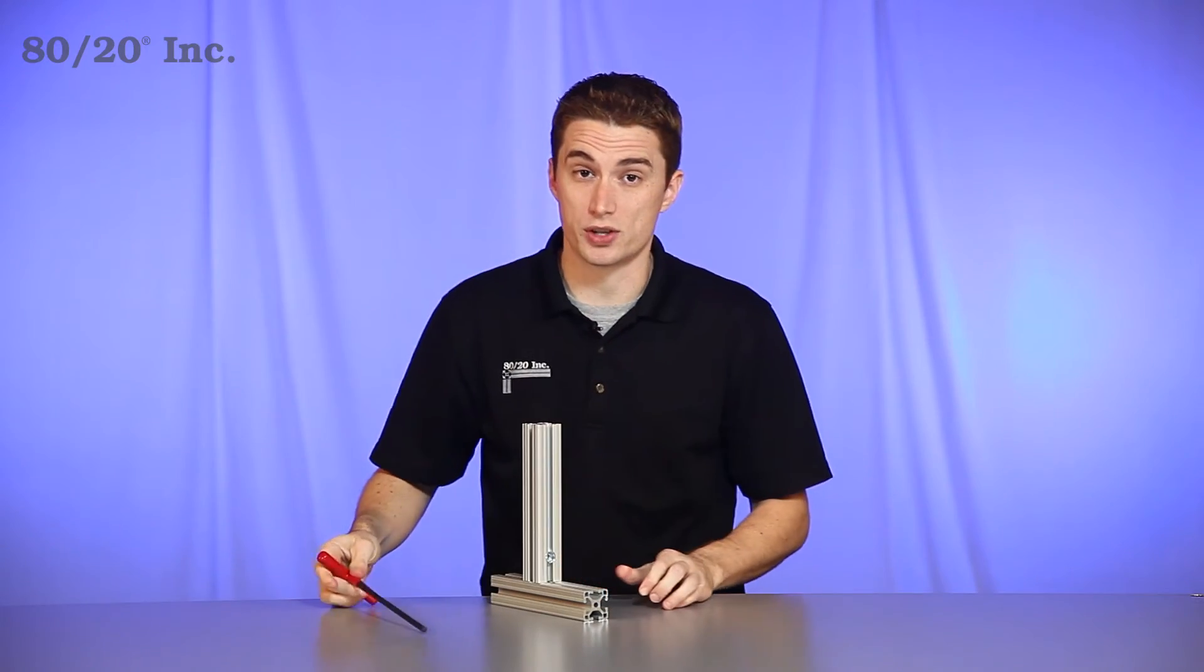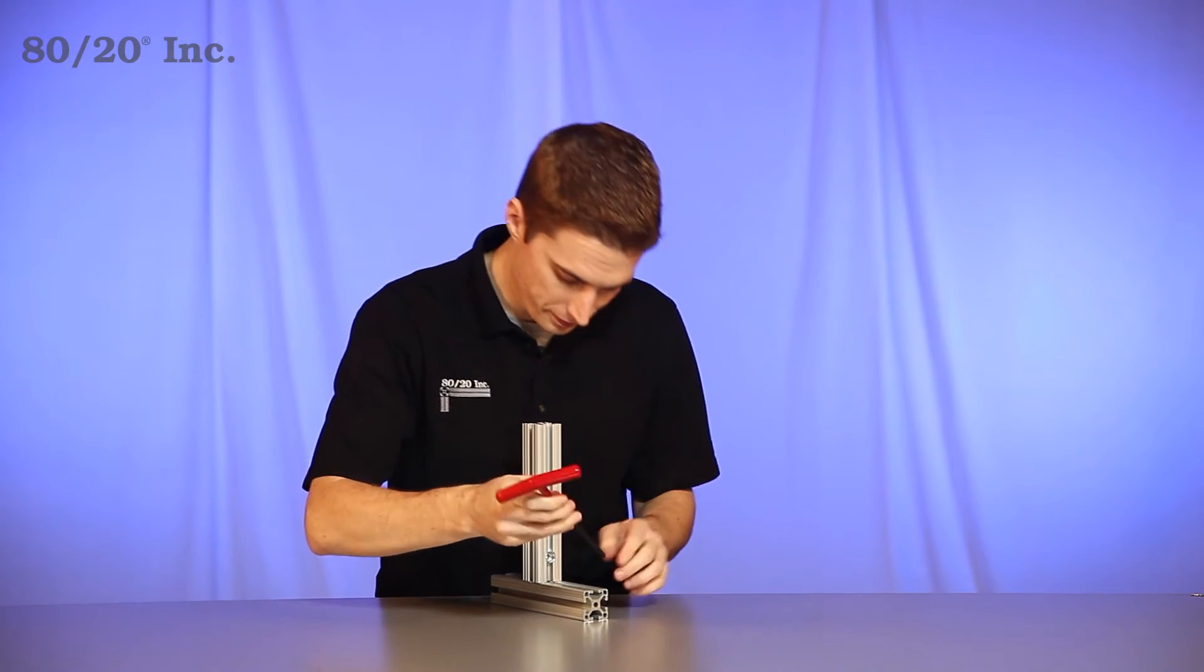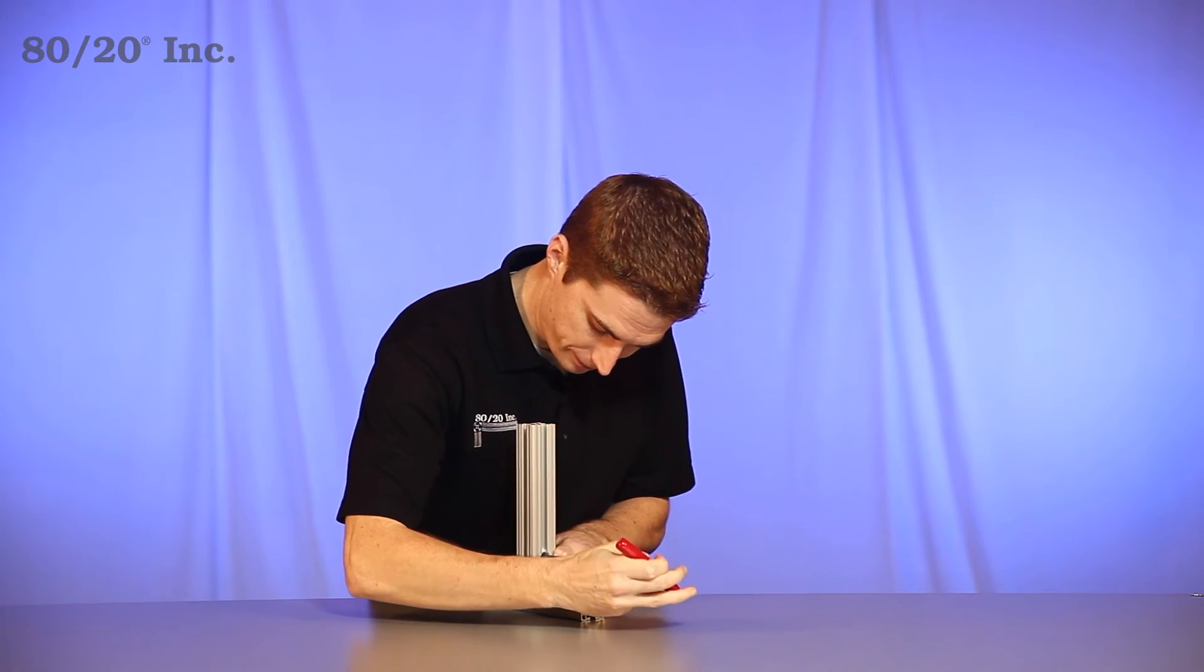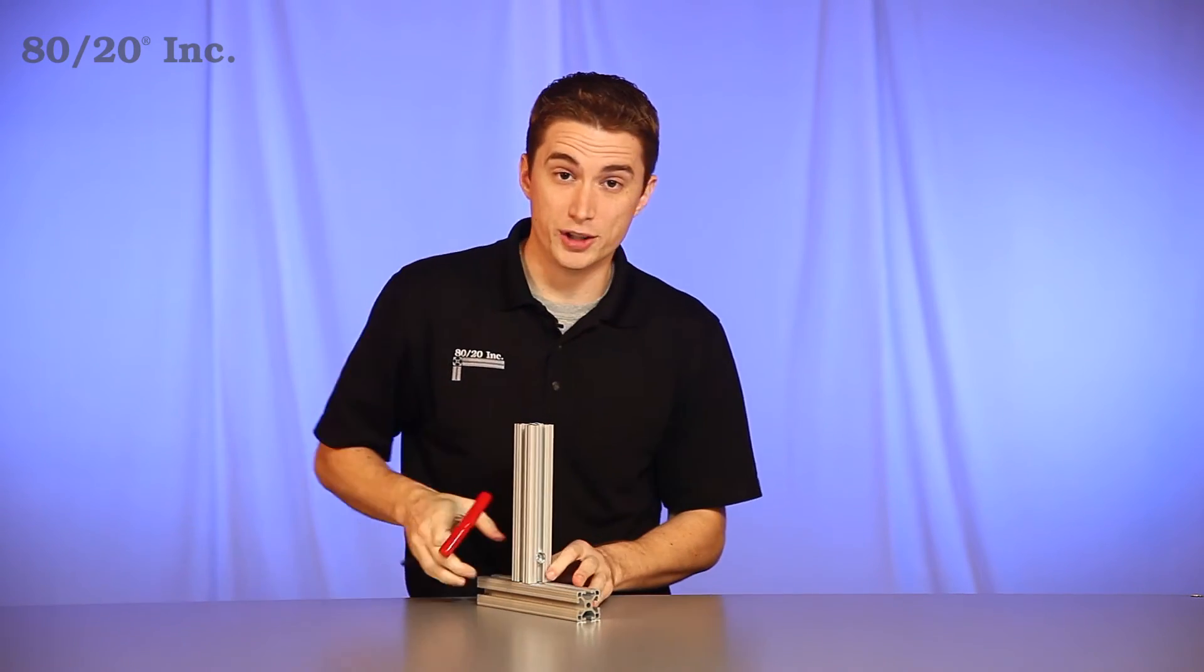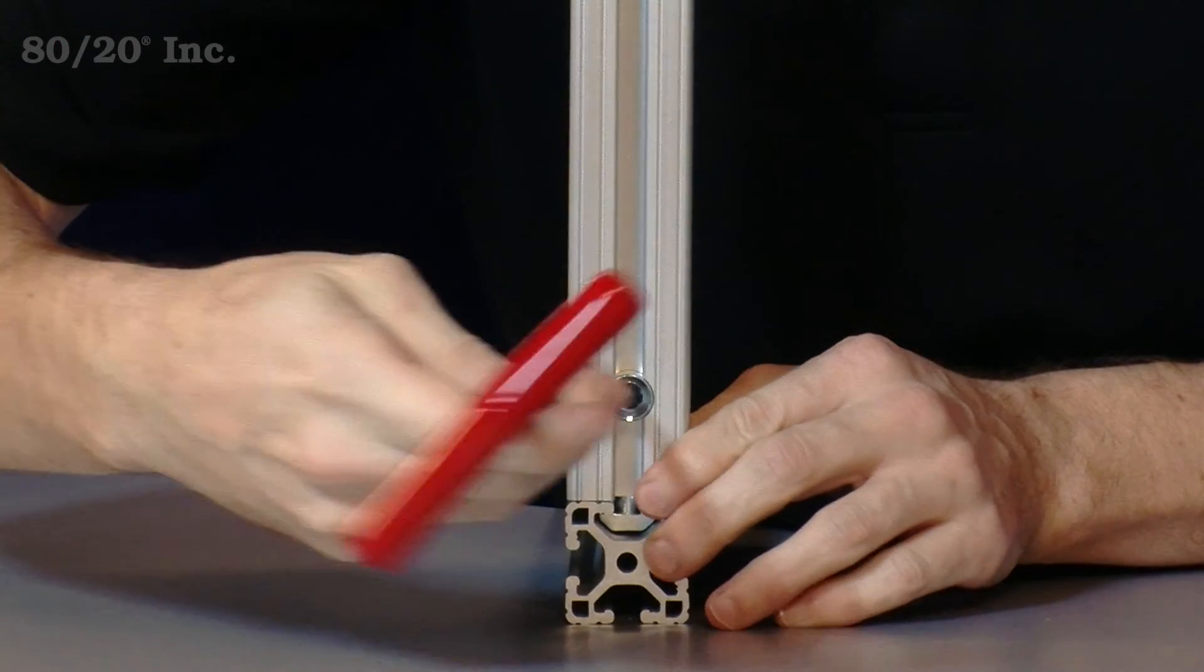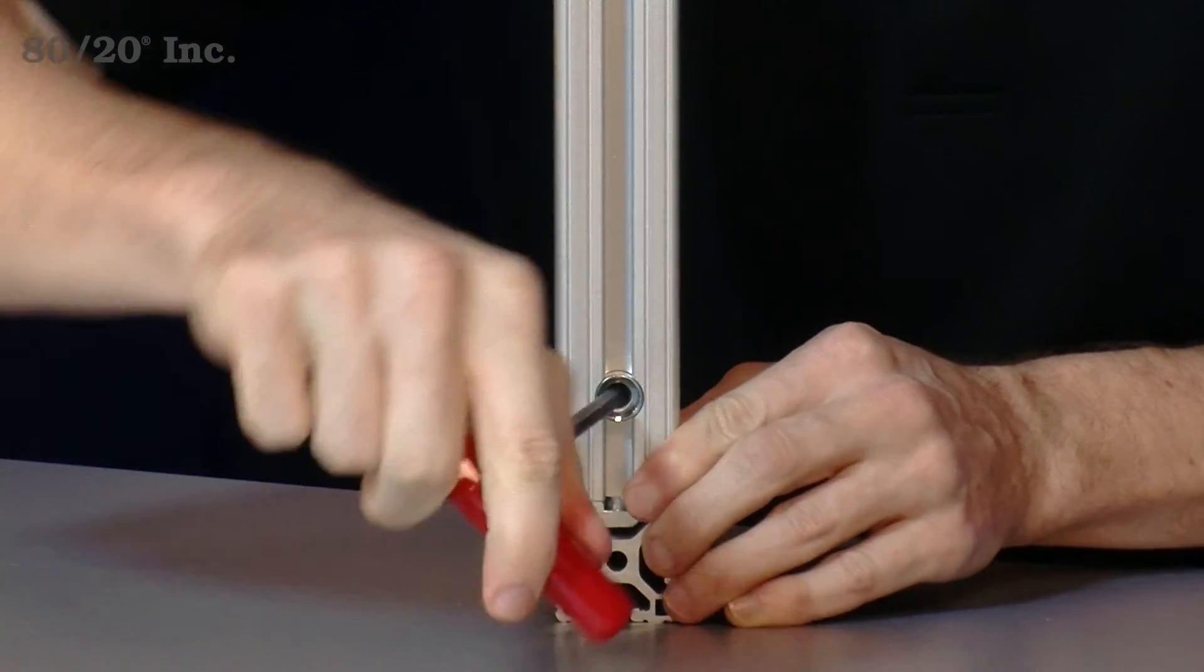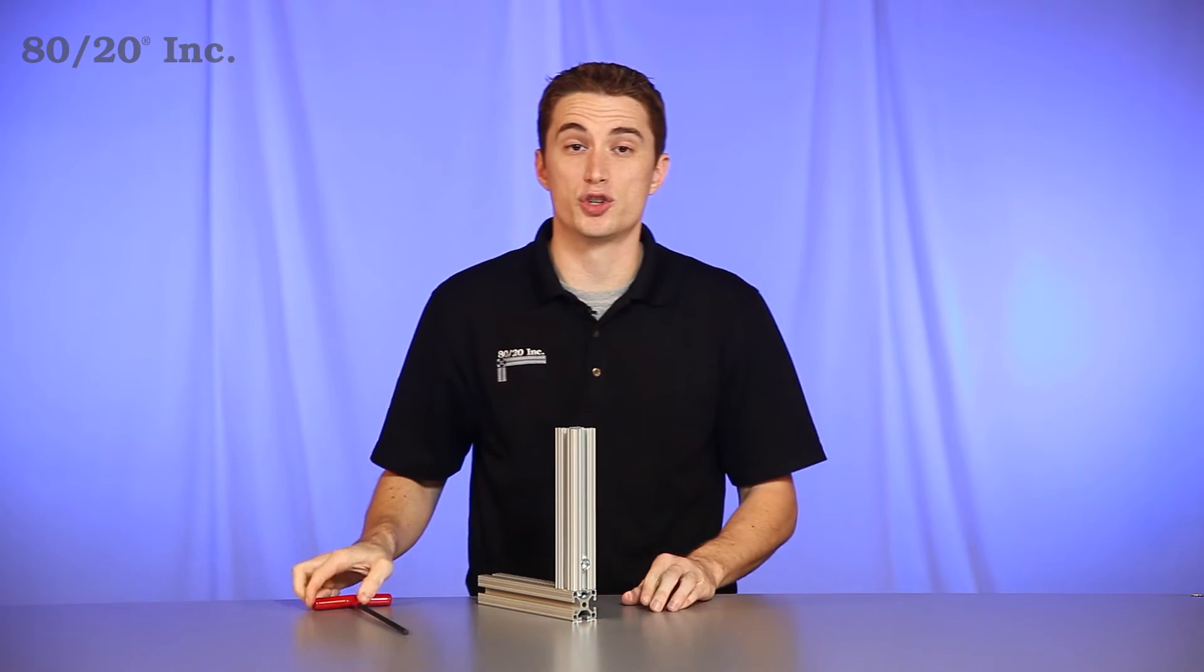Now the great thing about the central connector is its adjustability. If you need a new location on the bar, simply loosen up the central connector, find your new location on the bar, and tighten down firmly again. Once you have that tightened down you have a strong flush connection.